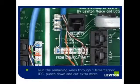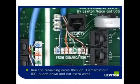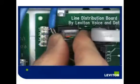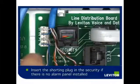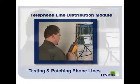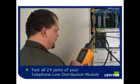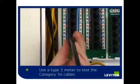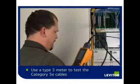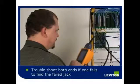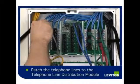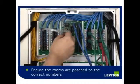Route your remaining three phone lines through the from-demarcation IDC and punch them down. If there is no alarm panel currently installed, insert the shorting plug. This will route your line from the IDC back through the in-from-demarc IDC. You will need to test all 24 jacks of your telephone line distribution module. Using a type 3 meter for the Category 5 cable, test all 24 jacks, ensuring they all pass. If one fails, you will need to troubleshoot both ends of the wire to find the failed jack. Now patch your phone lines to the telephone line distribution module, patching only specific rooms for specific numbers.